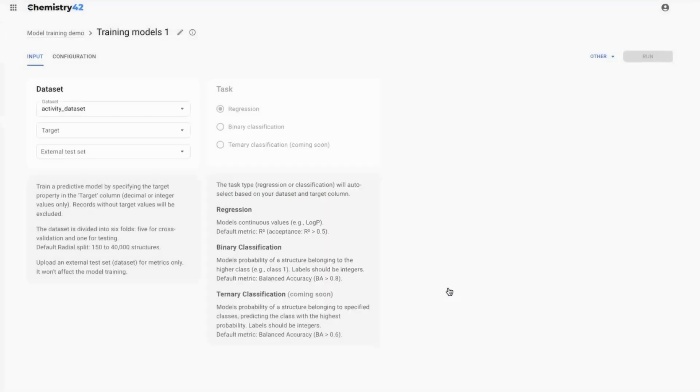In this example, we use log IC50 values given in the standard log value column to train the regression model for activity prediction.